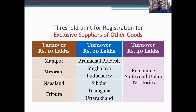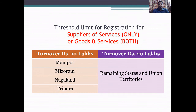The second category is the threshold limit for registration for exclusive suppliers of other goods. Here we consider only those supplying exclusively goods not covered in the other category. Under the turnover of Rs. 10 lakhs: Manipur, Mizoram, Nagaland, and Tripura. Under the turnover of Rs. 20 lakhs: Arunachal Pradesh, Meghalaya, Puducherry, Sikkim, Telangana, and Uttarakhand. The states not in these two categories come under the aggregate turnover of Rs. 40 lakhs — that is, the remaining states and union territories.